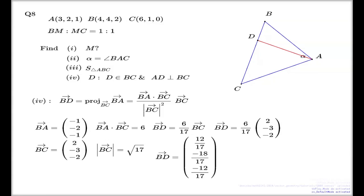The last step is to find the components for D, knowing the coordinates for the BD vector and knowing the components of B. Finding D vector is just simple addition, right? You have to add 4 to 12/17th, 4 to negative 18/17th, and 2 to negative 12/17th.